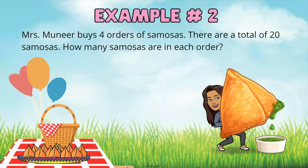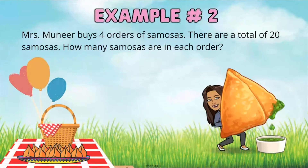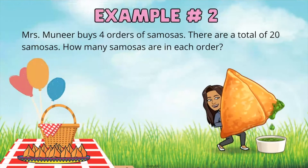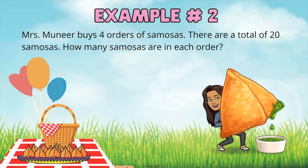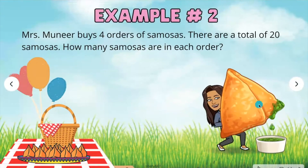Example number 2. Mrs. Muneer buys 4 orders of samosas. There are a total of 20 samosas. How many samosas are in each order? A samosa is a pastry that's filled with potatoes and peas. Some people also add chicken and a whole bunch of other stuff, but in this case she's having the potato samosa.